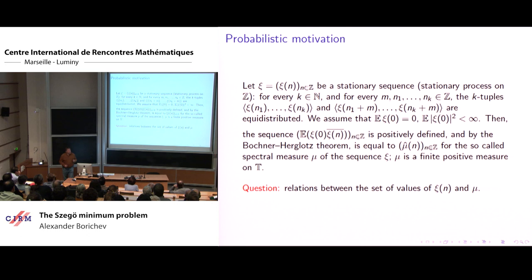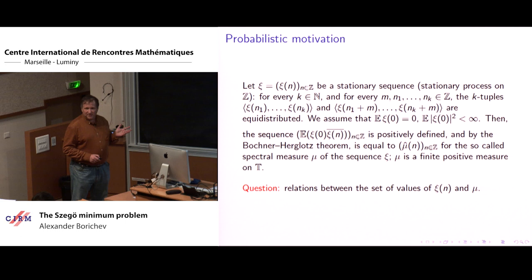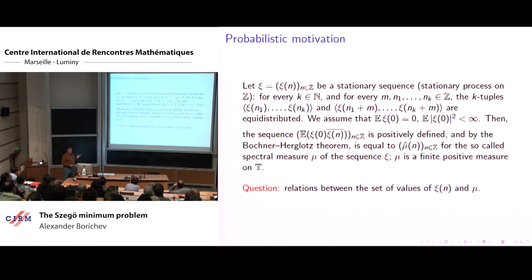In principle, if you have a stationary sequence, the set of its values may be arbitrary. If you consider a general stationary sequence, every finite positive measure could be a spectral measure of such a sequence — these two parameters are free. On the other hand, as soon as we start to impose some conditions on the set of values, other conditions appear on the spectral measures.